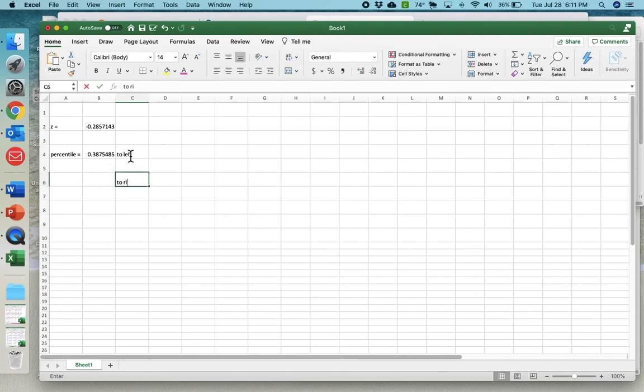If we want to the right, then we would just say equals, one minus, select that cell. There we go. That was our percentage to the right. 61.24% of females consume more than 2,000 calories per day.